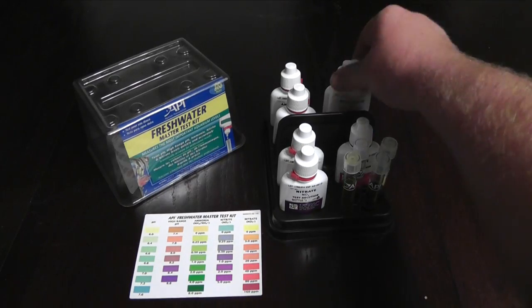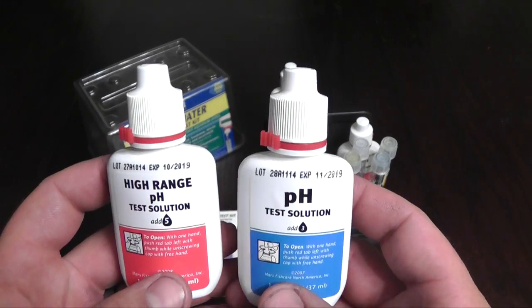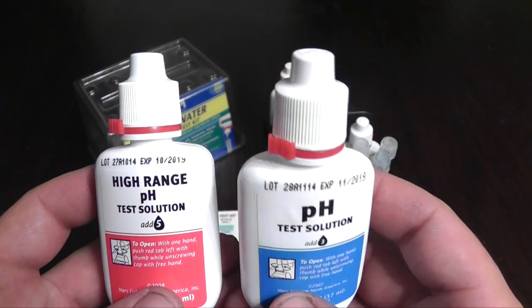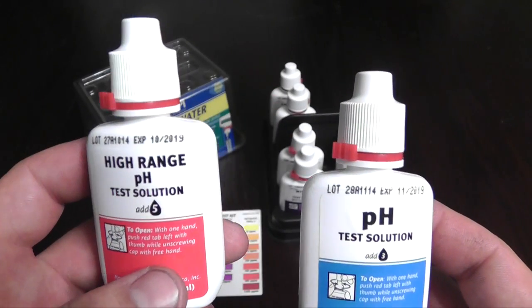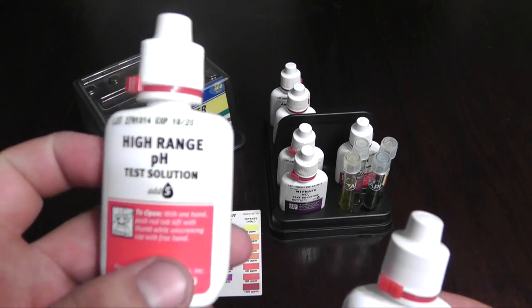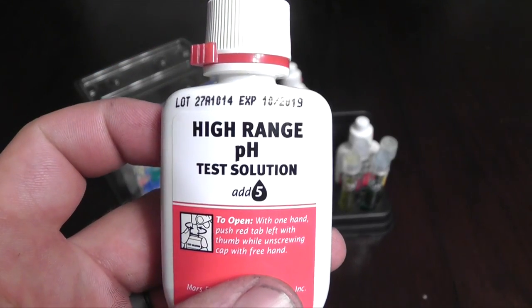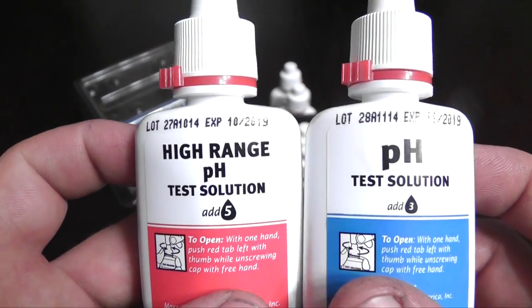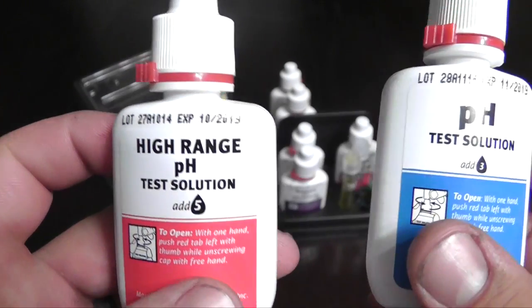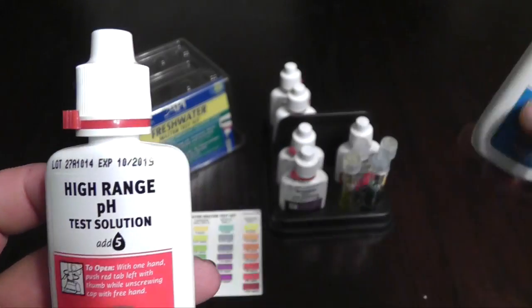Okay guys. Now whenever you order this API Freshwater master test kit, they send you a regular pH test solution bottle and a high range pH test solution bottle. I use this one right here because that's the one my tank uses. And as you can see, there's two different kinds here. Depending on what kind of fish you have, you'll know what bottle to use. Just read the instructions and you'll find out what you need.